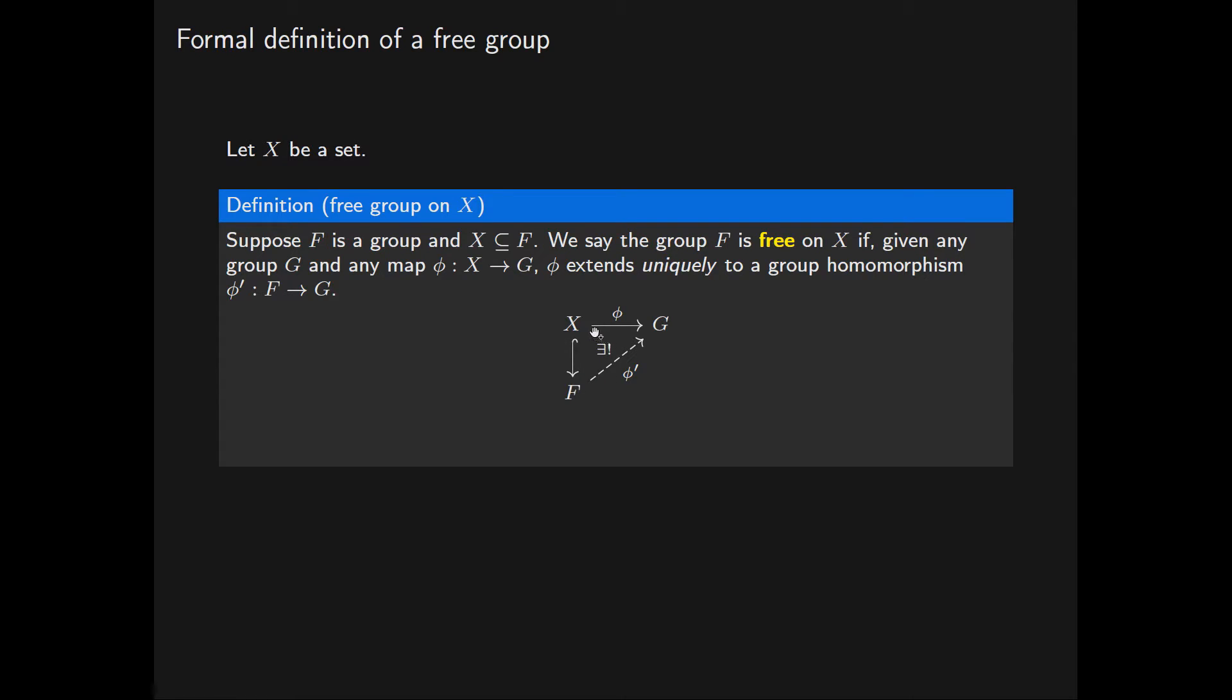And when we are in this situation, F is then a free group if and only if we have a unique group homomorphism from F to G called phi prime that extends phi, equivalently such that the following diagram commutes. Note that this free condition says that given any map phi from X into the group G.